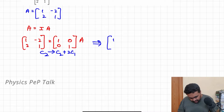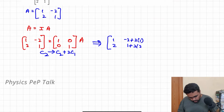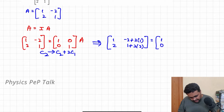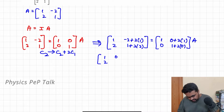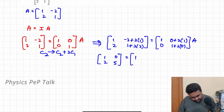So this implies: L1 as it is [1, 2]. L2 gives minus 2 plus 2 into 1, and 1 plus 2 into 2 equals 5. RHS: first column as it is, second column is 0 plus 2 into 1, and 1 plus 2 into 0. This gives LHS [1, 2; 0, 5] equal to [1, 2; 0, 1] into A. And 4 plus 1 becomes 5. RHS implies [1, 2; 0, 1] into A.